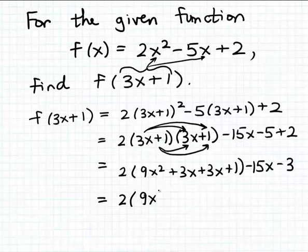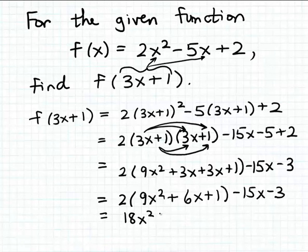So I would have 9x squared plus 6x plus 1 minus 15x minus 3. And then that's going to be multiplied by the 2. So we get 18x squared plus 12x plus 2 and then minus 15x minus 3.